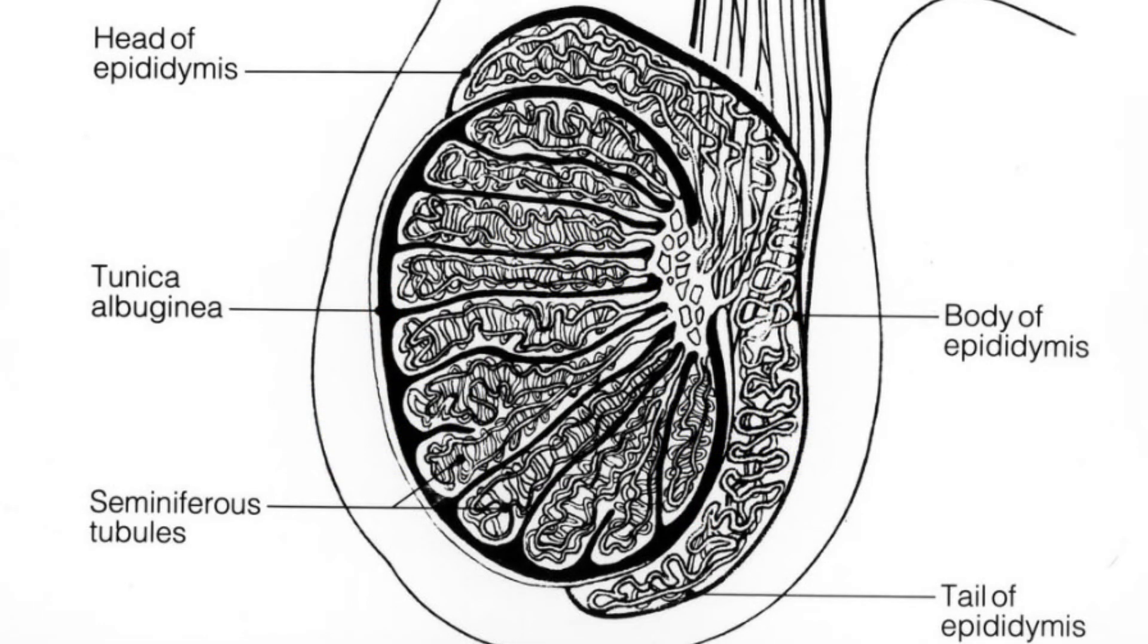The testes is the male reproductive organ. The functions of the testes are to produce both sperm and androgens, primarily testosterone.